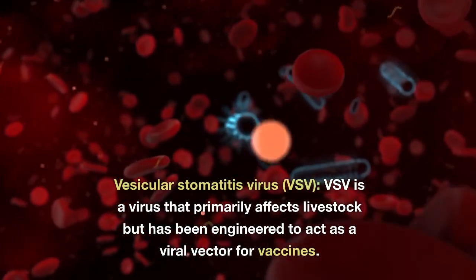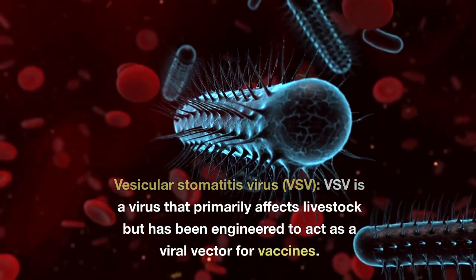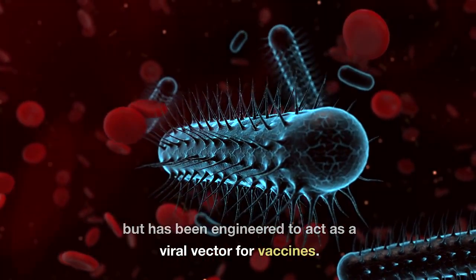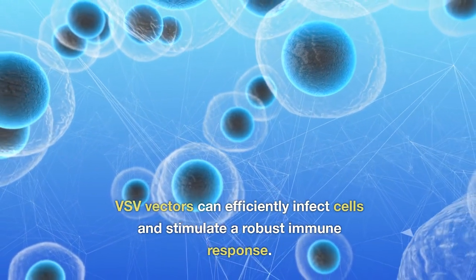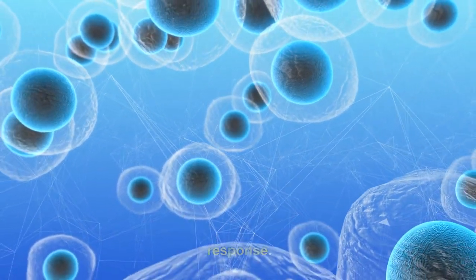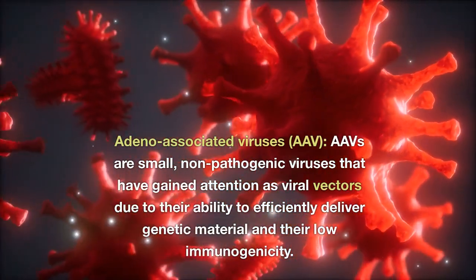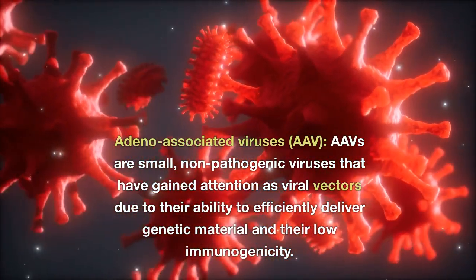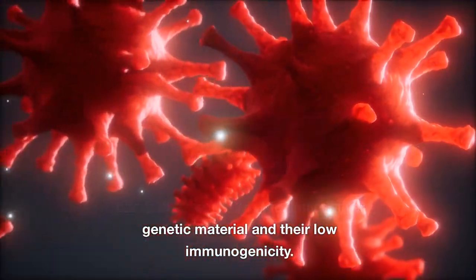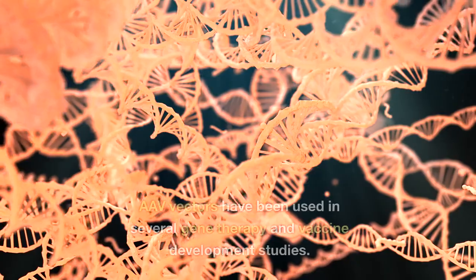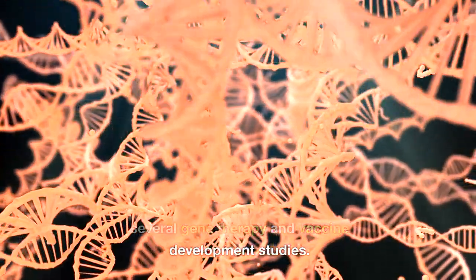Vesicular stomatitis virus (VSV) is a virus that primarily affects livestock but has been engineered to act as a viral vector for vaccines. VSV vectors can efficiently infect cells and stimulate a robust immune response. Adeno-associated viruses (AAV) are small, non-pathogenic viruses that have gained attention as viral vectors due to their ability to efficiently deliver genetic material and their low immunogenicity. AAV vectors have been used in several gene therapy and vaccine development studies.